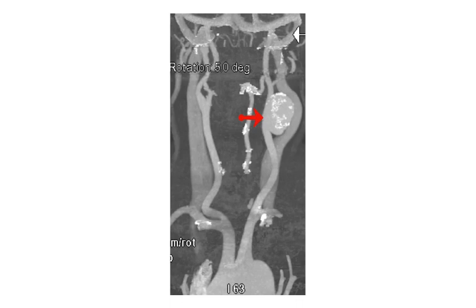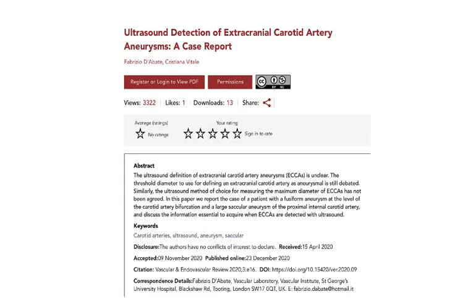A CT angiogram was requested, and this confirmed the presence of an enlargement of the internal carotid artery, which the ultrasound operator considered to be a pseudo-aneurysm. However, the presence of extensive calcifications throughout this area suggested that this is actually an aneurysm. If you want to find out more about carotid artery aneurysms and the role of ultrasound, please refer to the article written by ABC Vascular Author.